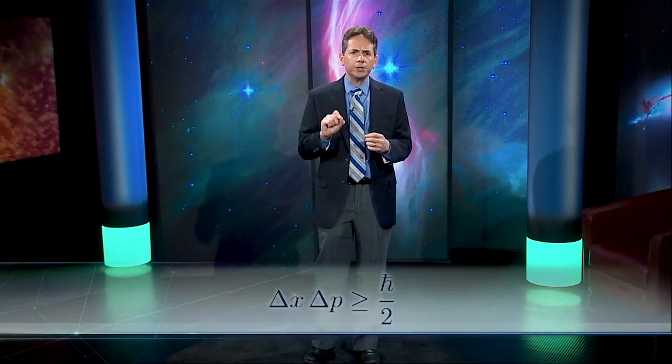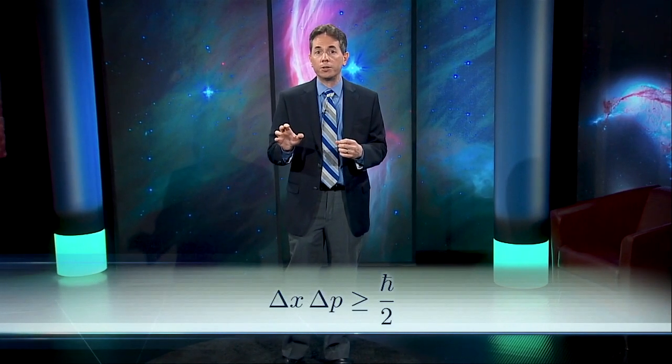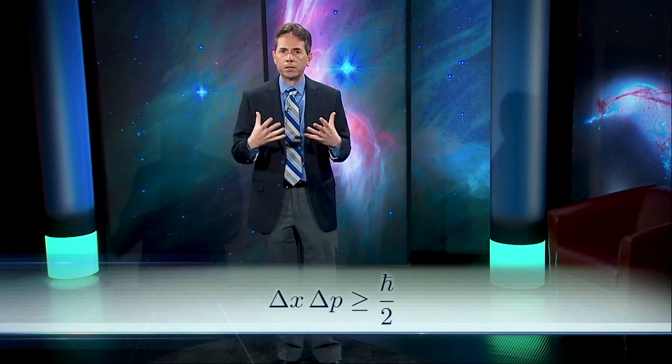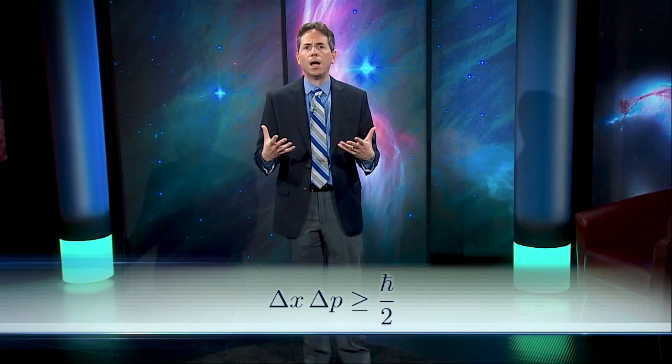And the wave function obeys Heisenberg's uncertainty principle. If you try to pin down a particle's location by trapping the wave function in a tiny volume, then the particle's momentum, mass times velocity, becomes more uncertain. Mathematically, we say delta x times delta p is greater than h-bar over 2, where delta x is the spatial extent of the cloud, and delta p is the extent of the momentum cloud.